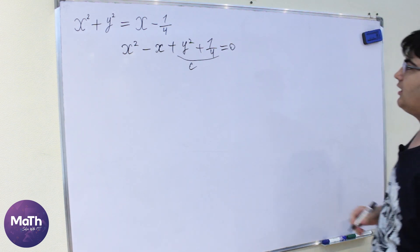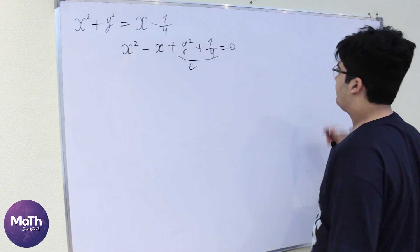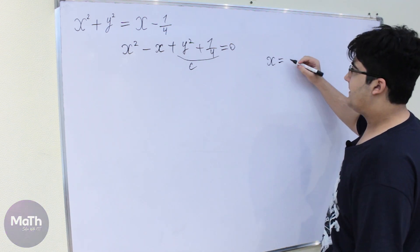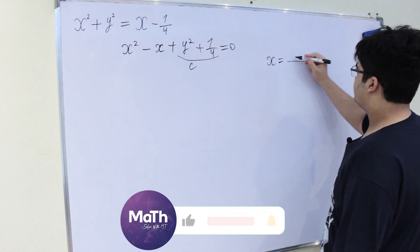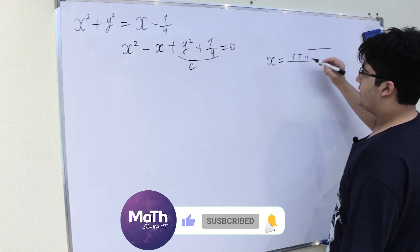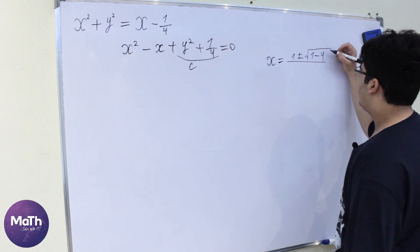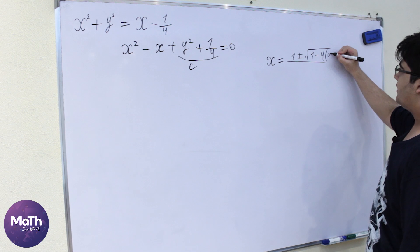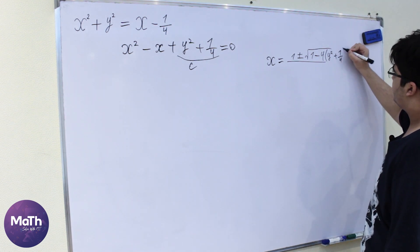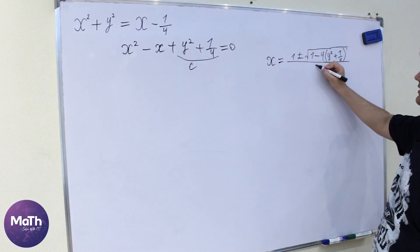So let's solve this quadratic equation here. So x is equal to 1 plus minus square root of 1 minus 4 multiplied by y squared plus 1/4 and divided by 2.